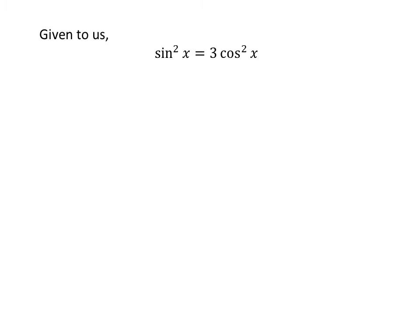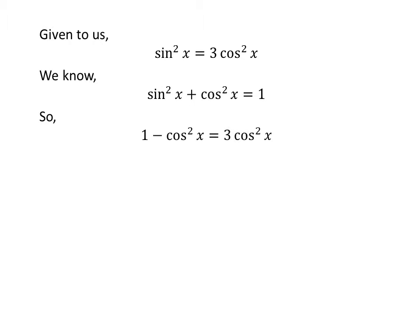Given: sin²x = 3cos²x. We know the famous trigonometric identity sin²x + cos²x = 1. Applying this identity gives us 1 minus cos²x is equal to 3 times cos²x.